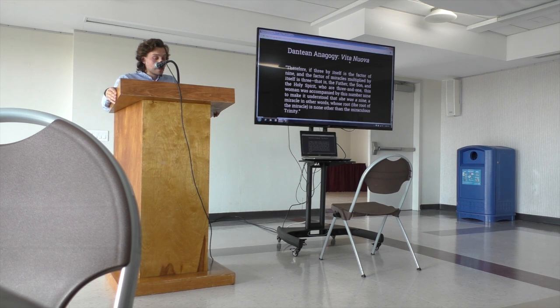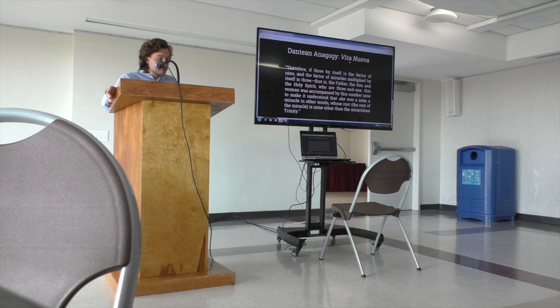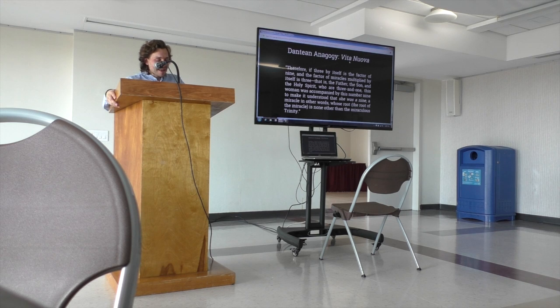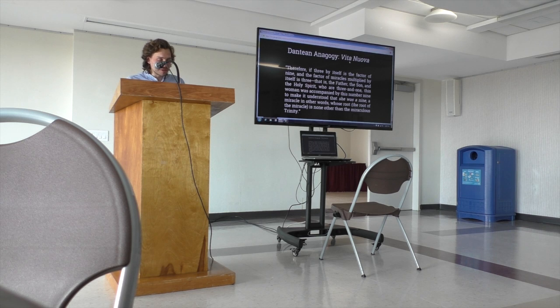Anagogy is when the word impossibly touches the thing. So an example of this is Dante's numerological description of Beatrice in the Vita Nuova. Therefore, three by itself is the factor of nine, and the factor of miracles multiplied by itself is three, that is, the Father, the Son, and the Holy Spirit, who are three and one. This woman was accompanied by this number nine to make it understood that she was a nine. A miracle, in other words, whose root, the root of the miracle, is none other than the miraculous trinity. This is a little trippy here, but here, Beatrice is not only a woman, but a woman who is a miracle, and thus a numeric entity whose square root is the trinity. That's Dante in anagogy.